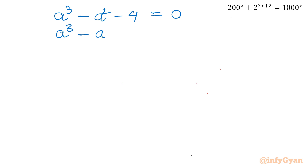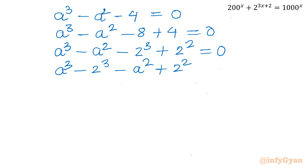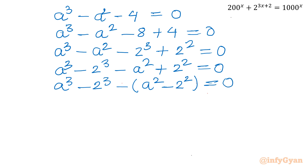I will rewrite a cube minus a square minus 4 as a cube minus a square minus 8 plus 4 equal to 0. So a cube minus 8 can be written as a cube minus 2 cube, and 4 can be written as 2 square. Rearranging terms: a cube minus 2 cube, then minus a square minus 2 square equal to 0. You can see two algebraic identities — a cube minus b cube and a square minus b square — which we are going to apply.